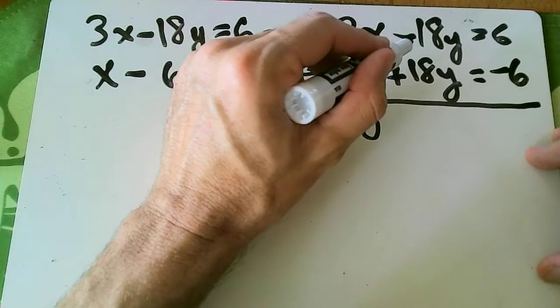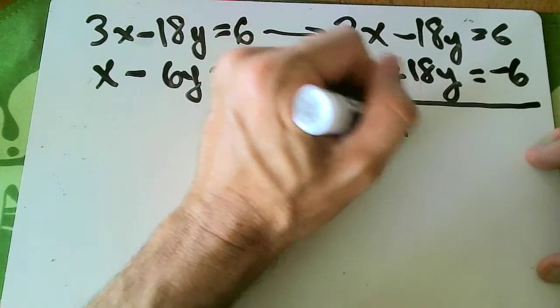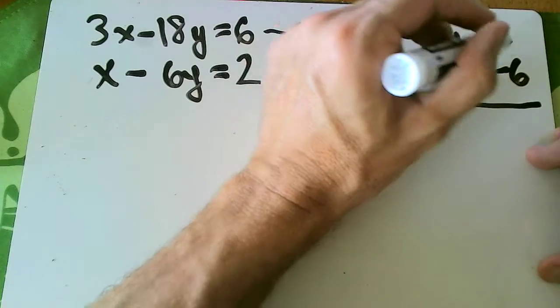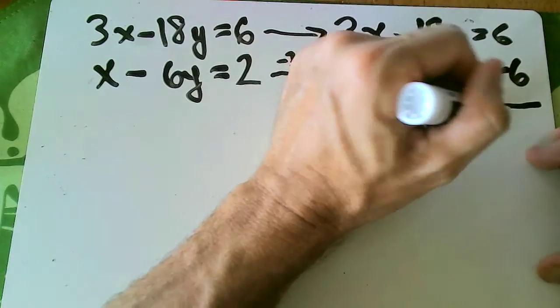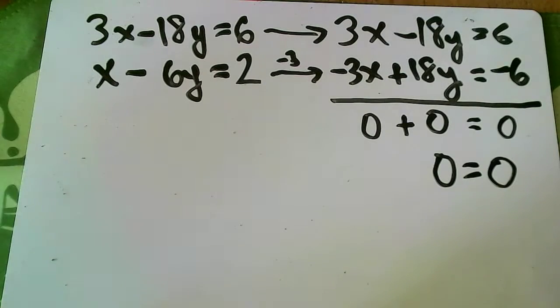Uh-oh, negative 18y plus 18y is also 0. And uh-oh, 6 minus 6 is also 0. So my answer is that I get 0 equals 0.